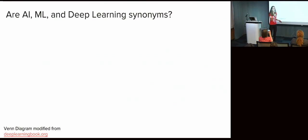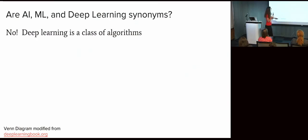So a question I hear a lot is: are artificial intelligence, machine learning, and deep learning all synonyms? Is deep learning just a marketing buzzword? And the answer is no. Deep learning is a very specific class of powerful algorithms.